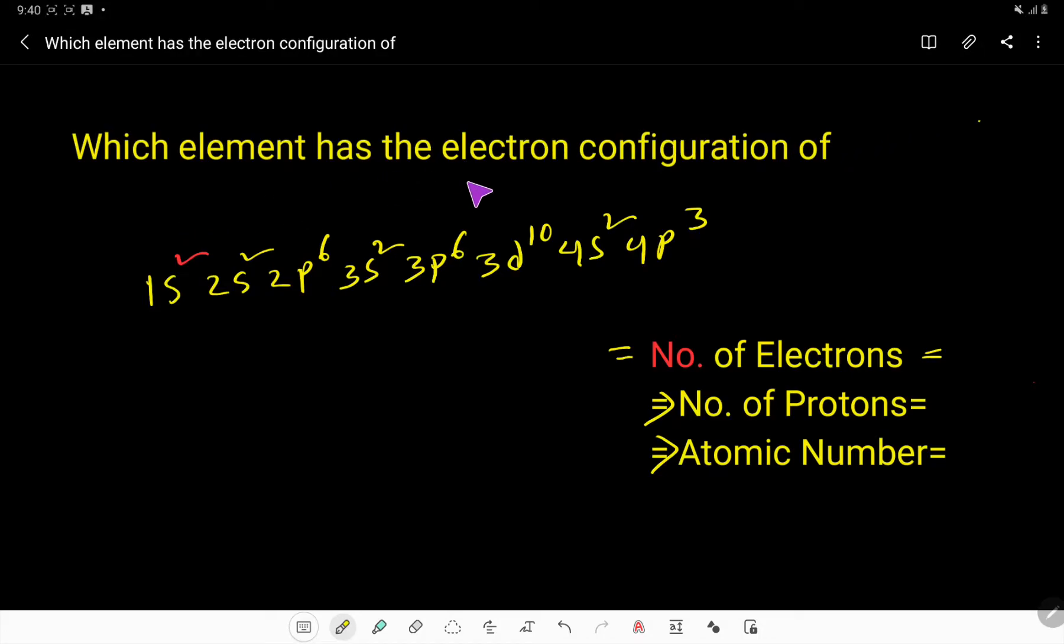Which element has the electron configuration of 1s2, 2s2, 2p6, 3s2, 3p6, 3d10, 4s2, and 4p3? To find out the name of this element, at first we have to count the number of electrons.